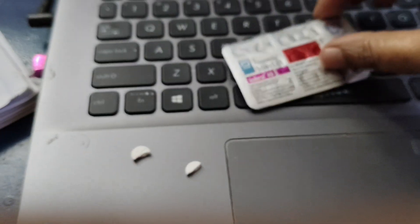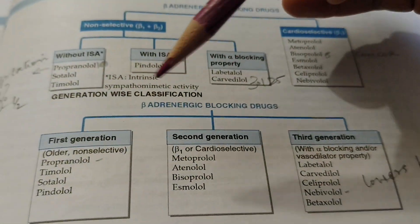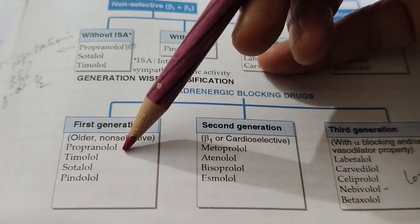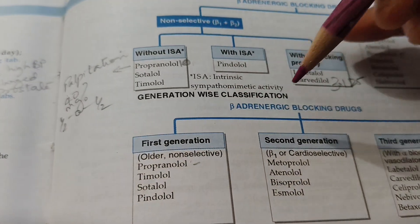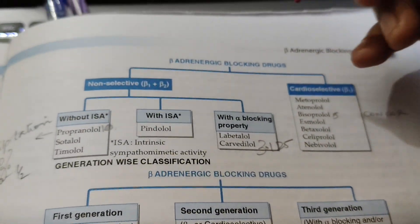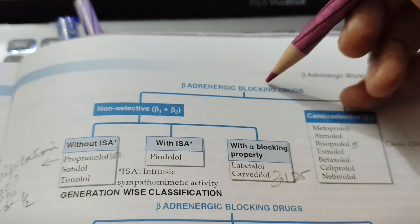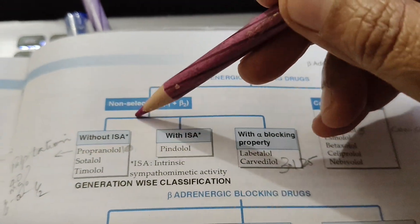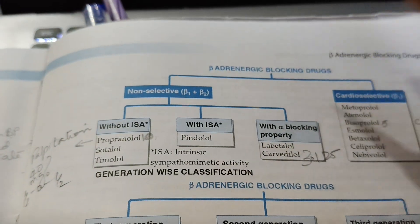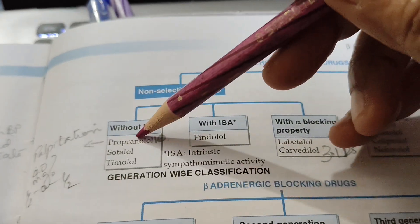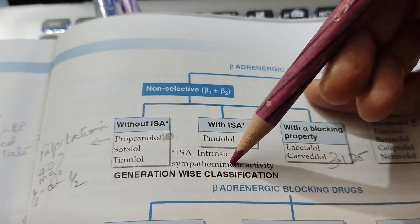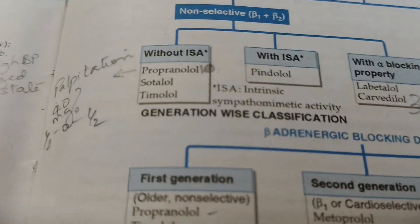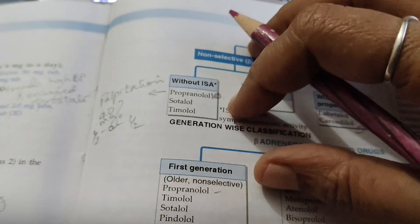Now let us learn about propranolol. Propranolol is a beta blocker — it is a first generation beta adrenergic blocking drug. We use it for anxiety; if people have anxiety we give it. It will reduce heart rate and reduce the adrenergic effect, so it should calm anxiety. In beta adrenergic blocking drugs, propranolol is non-selective — it is not beta 1 or beta 2, it blocks both. It has no intrinsic sympathomimetic activity (ISA).